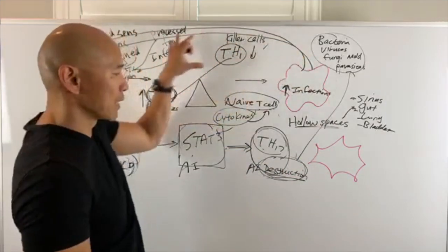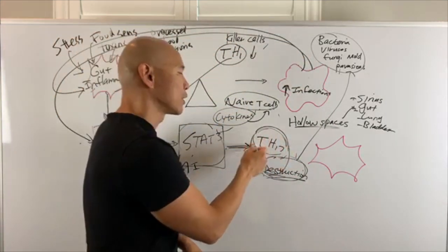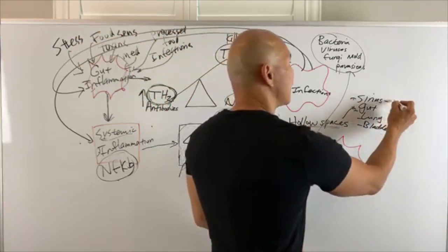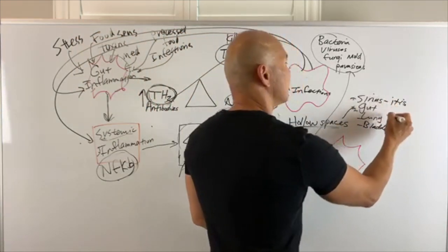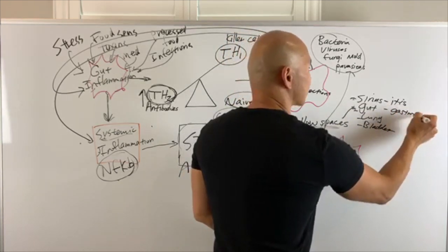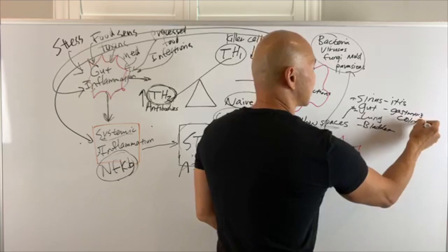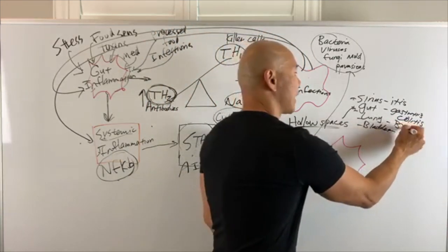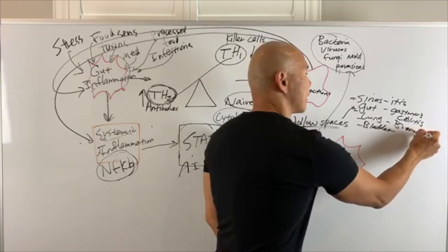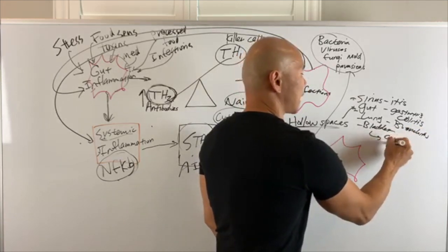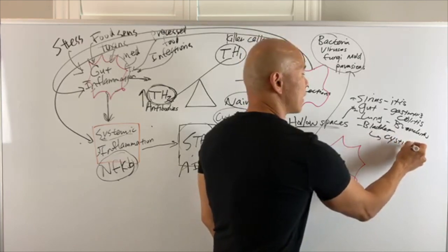So what happens is these hollow spaces are prone to infection and the TH17 cells are there to destroy them. And so what happens is when your immune system gets out of balance and these TH17 cells will start to create inflammation in these areas. So people get sinusitis, you get gastritis or colitis, all your itises. Your lung, you get bronchitis. Your bladder, you get your cystitis.